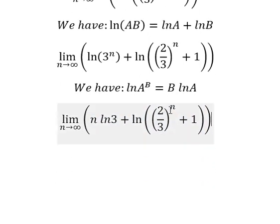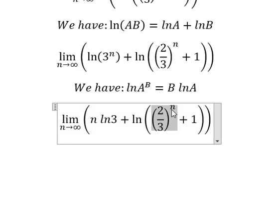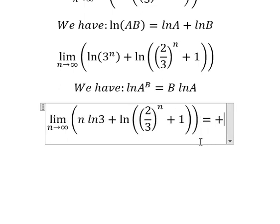So when n approaches positive infinity, this one you get is zero, and number one you get is zero in here. But this one still goes to positive infinity. So with n times ln 3, you get positive infinity.